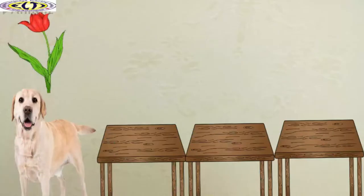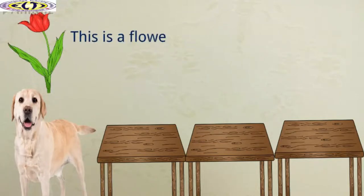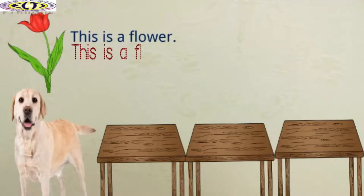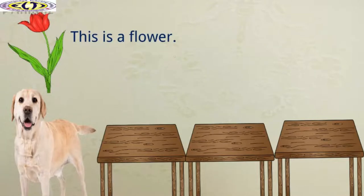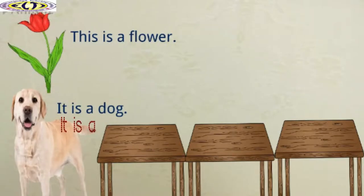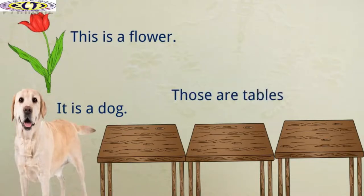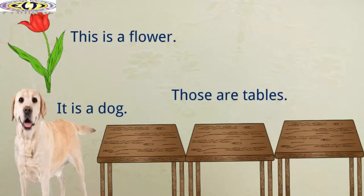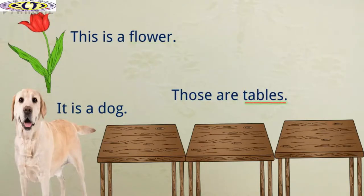Let us look at a few more sentences — please repeat them after me: 'This is a flower.' 'It is a dog.' When you ask the question 'What is it?' for each of these sentences, you get the answers: flower, dog, table. The words flower, dog, and table are nouns.